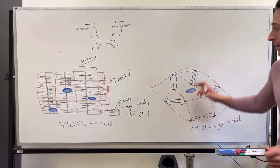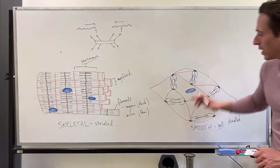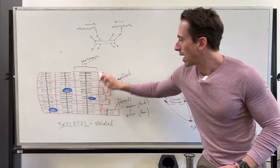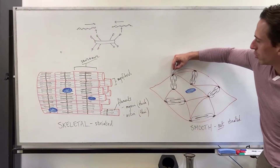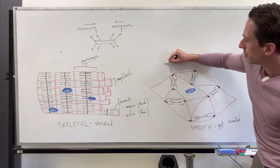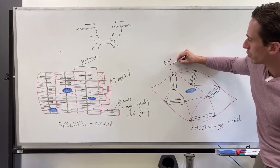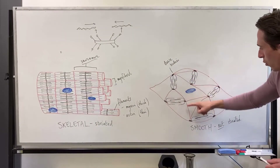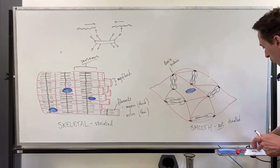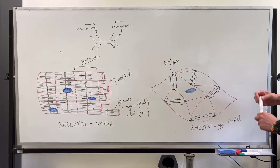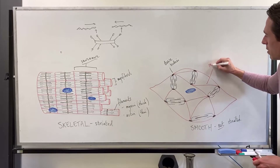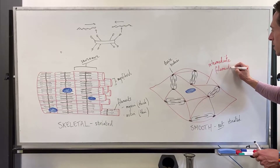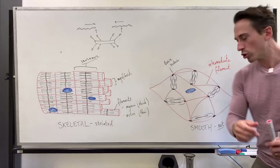So: it's still actin and myosin, and they still have myosin heads that need to bind to the actin. But in smooth muscle, the filaments are not bound to M lines and Z discs — they're bound to structures called dense bodies, which are protein-based structures. The dense bodies are connected to one another through more cytoskeletal proteins called intermediate filaments, which connect one dense body to the next.